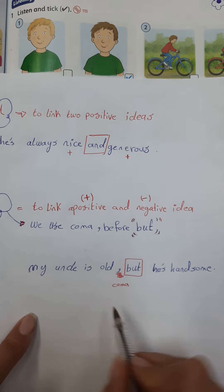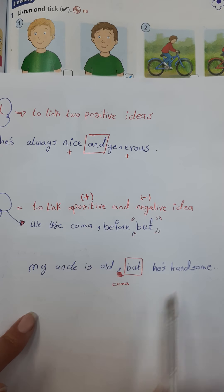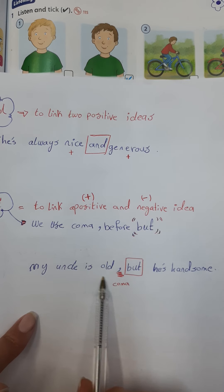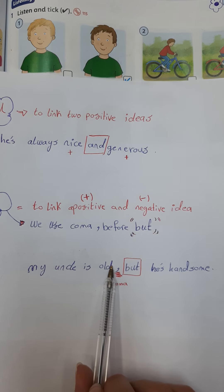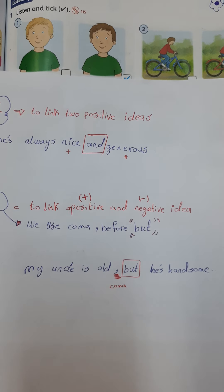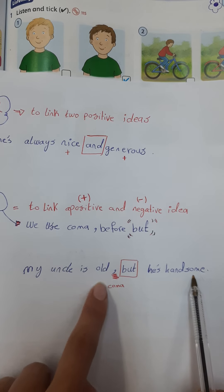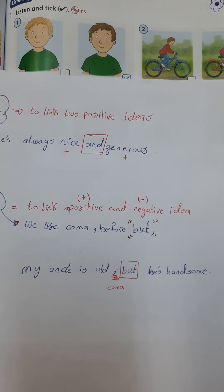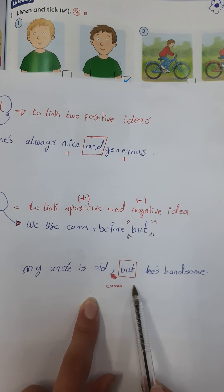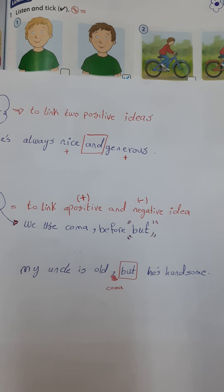For example: 'My uncle is old but he is handsome.' My uncle is old in age, and normally we think that with age, looks decline. But then we say 'but he is handsome.' You see — one idea is positive and the other is negative, they are opposites. You would not say 'old and handsome' — you say 'old but he is handsome.'